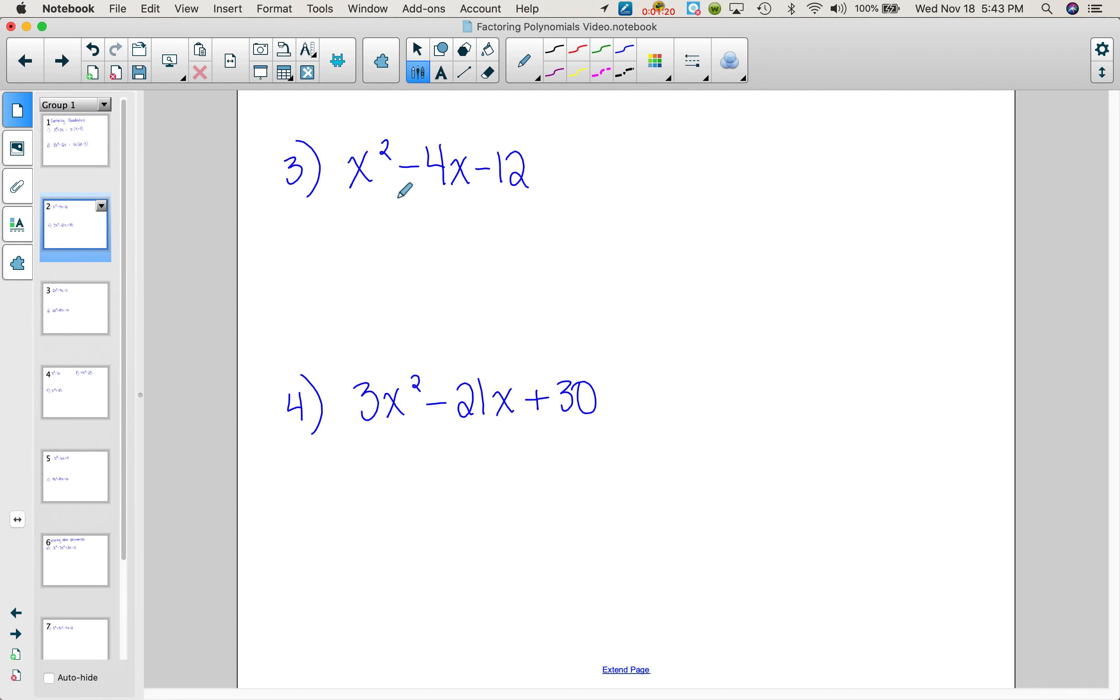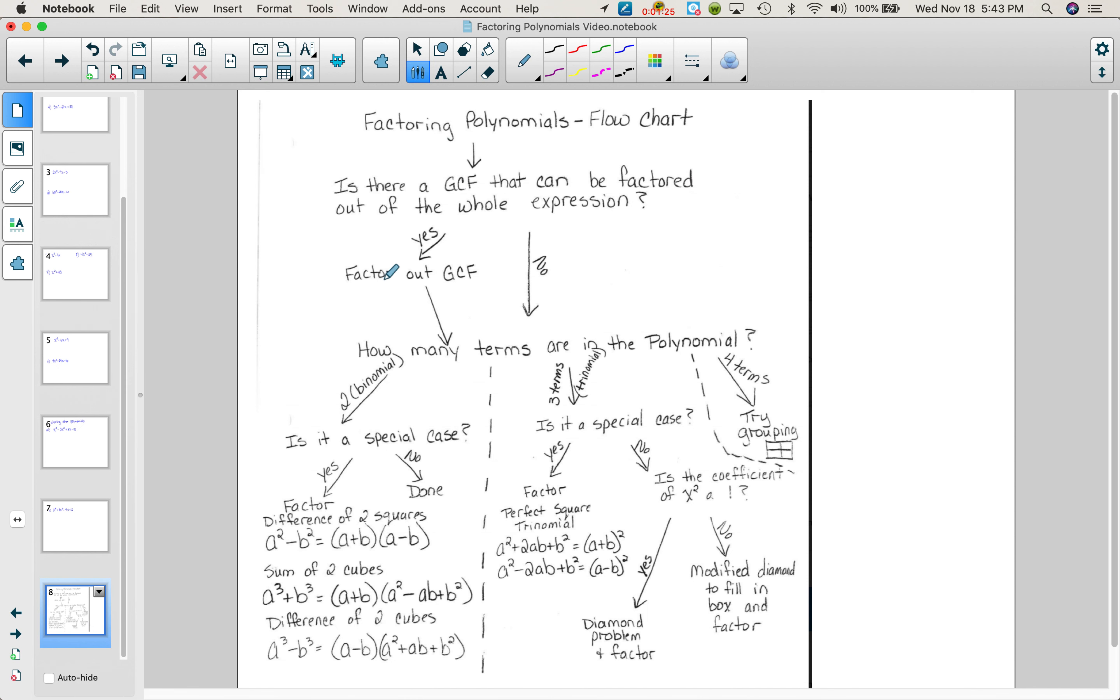Next problem, is there a GCF? No. So where do we go next? How many terms are in the polynomial? Well, there are three terms, which makes it a trinomial. Is it a special case? We're going to talk about those in just a minute. It's not a special case, no. Is the coefficient of x squared a 1? Yes, it was. So then it says to do a diamond problem and factor. So that's what we're going to do.